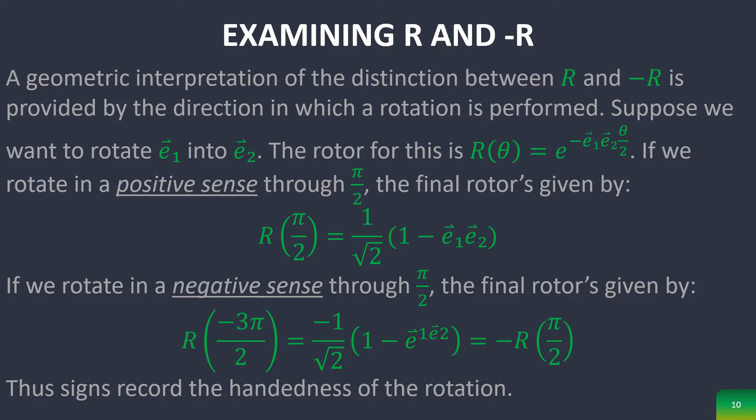So if we want to rotate a vector E1 into vector E2, the rotor for this is given here. If we rotate in a positive sense through π over 2, the final rotor is given here. And then if we want to rotate in a negative sense, then the rotor is given here. This right here should be the exact same as this. And so rotating in a negative sense is just a rotor being negative of the other one. Therefore sign records the handedness of the rotation.